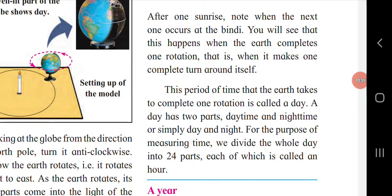After one sunrise, note when the next one occurs at the bindi. You will see that this happens when the earth completes one rotation — one complete turn around itself. This period of time that the earth takes to complete one rotation is called a day. A day has two parts: daytime and nighttime. Sunrise, noon, and sunset are caused by the rotation of the earth. The time period from one sunrise to the next sunrise is called one day.